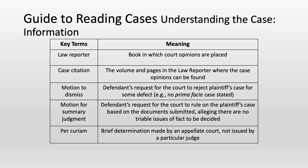A motion to dismiss means the defendant is requesting that the court reject the plaintiff's case because there's a defect — whether there's no prima facie case or they didn't meet the minimum criteria to be eligible for a lawsuit. A motion for summary judgment is when the defendant requests the court to rule on the case based on documents submitted, saying there's nothing really trialable that needs to be done because all the information is there and the court should just rule that the case is not relevant.